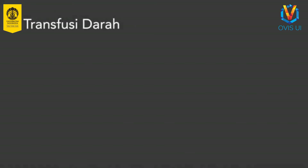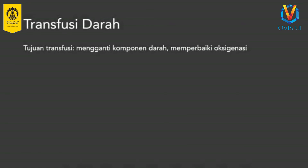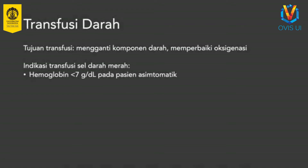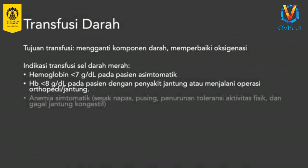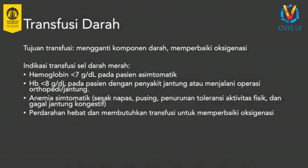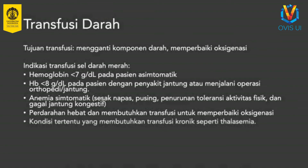Transfusi darah. Pada beberapa kondisi, anemia cukup berat sehingga memerlukan transfusi sel darah merah. Transfusi bertujuan untuk mengganti komponen darah dan memperbaiki hantaran oksigen ke jaringan. Transfusi darah diindikasikan pada kondisi sebagai berikut: kadar hemoglobin kurang dari 7 gram per desiliter pada pasien asimptomatik; kadar hemoglobin kurang dari 8 gram per desiliter pada pasien dengan penyakit jantung atau yang menjalani operasi ortopedi atau jantung; anemia simptomatik yaitu sesak nafas, pusing, penurunan toleransi aktivitas fisik, dan gagal jantung kongestif; mengalami perdarahan hebat dan membutuhkan transfusi untuk memperbaiki oksigenasi; serta kondisi tertentu yang membutuhkan transfusi kronik seperti thalassemia.